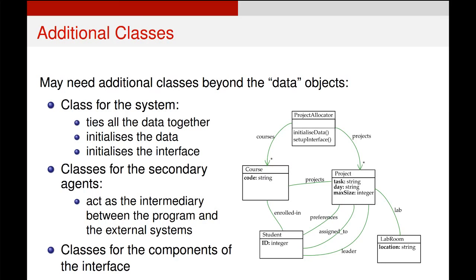We could also have secondary agents. Let's say this needed to talk to an external website system - we might change the data for Student, Course, and Project to interface more effectively with this external system, using another class to do that. Finally, if there are other components of the interface like a GUI or hardware interface, you can also create classes for them. Interface classes are quite often used in addition to a system class.